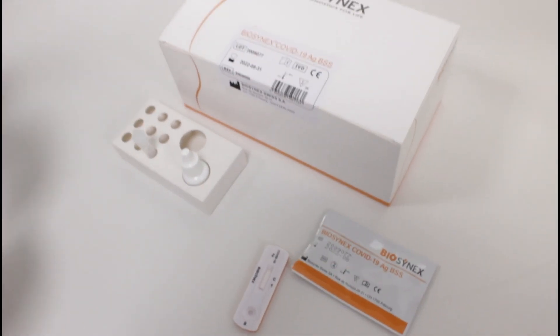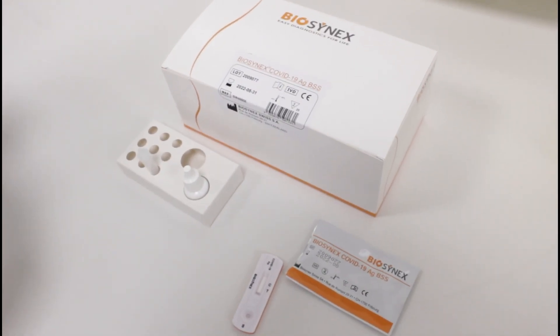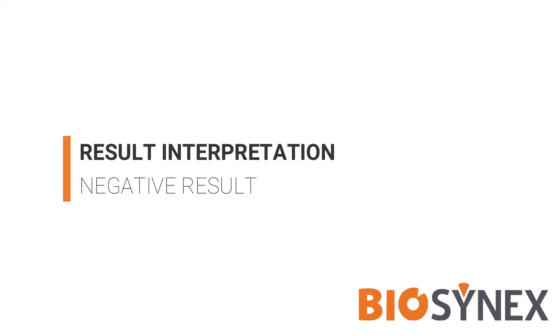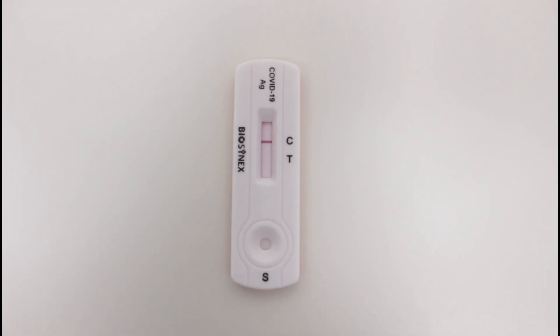Set a timer for 15 minutes and interpret the result after 15 minutes. If only one coloured line appears in the C area, the test is negative.